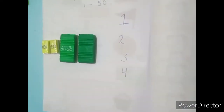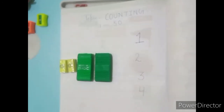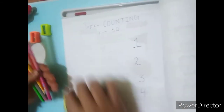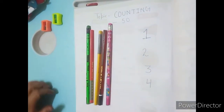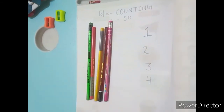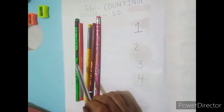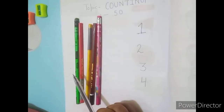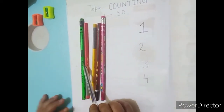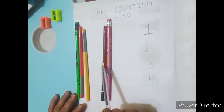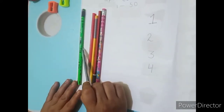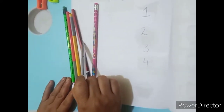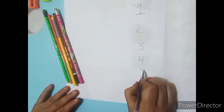Now I am showing your next object. Look here — these are pencils. How many pencils are here? Five. Count it: one, two, three, four, five. Repeat again: one, two, three, four, five. Now you have to write five.